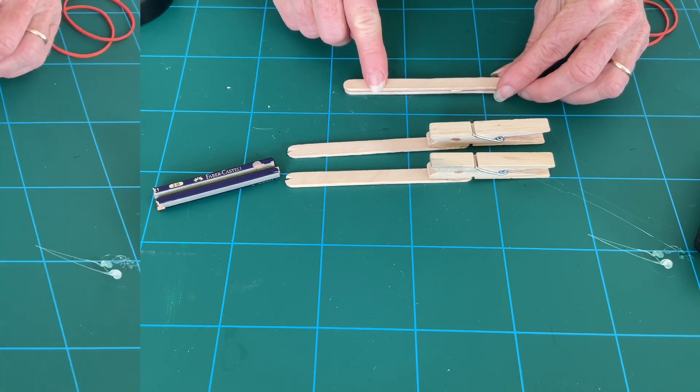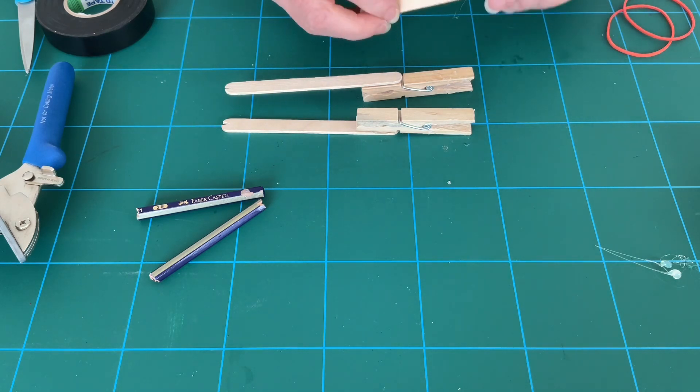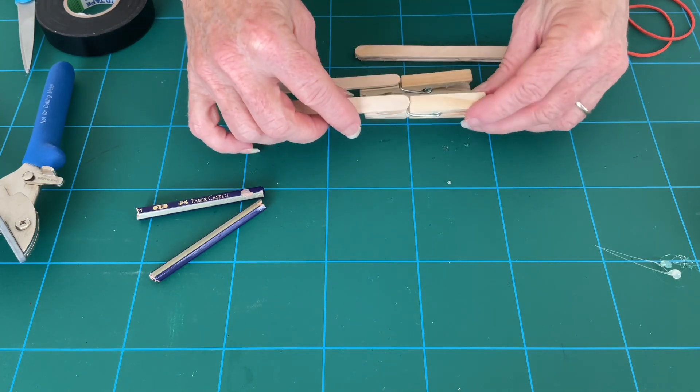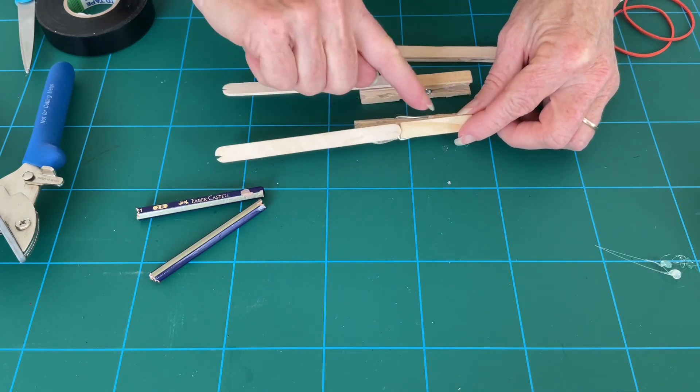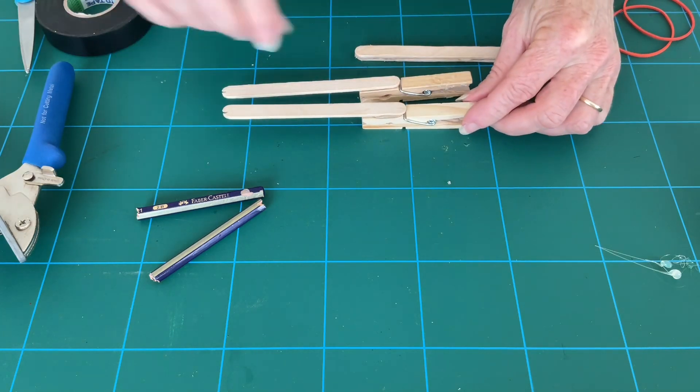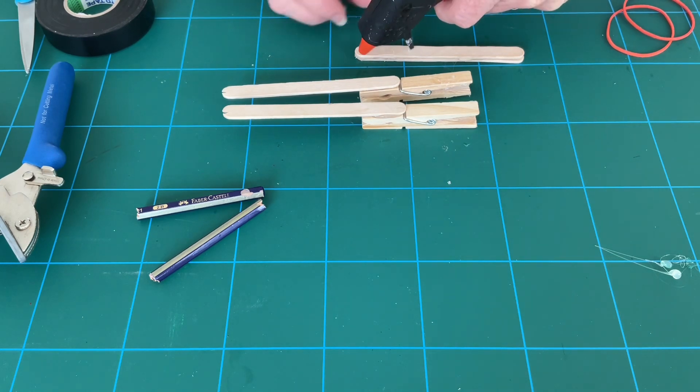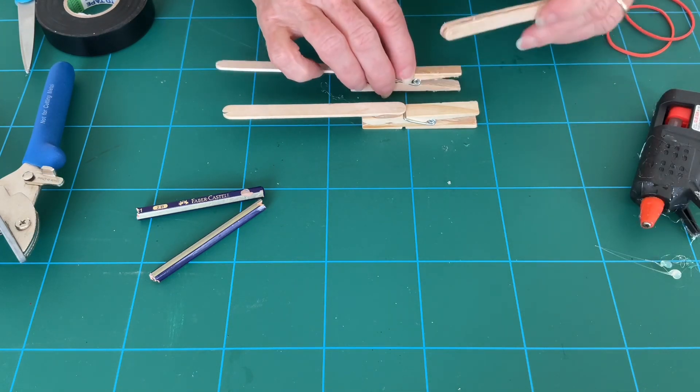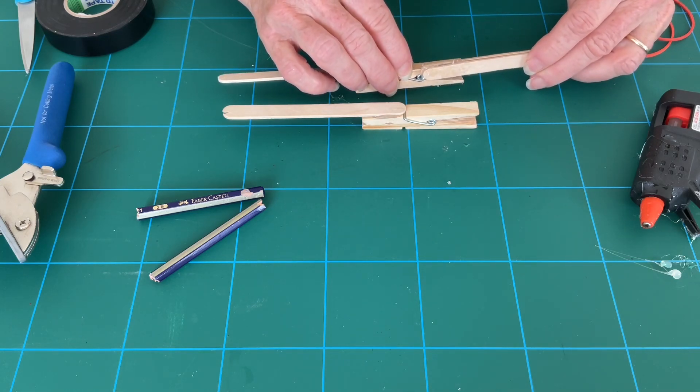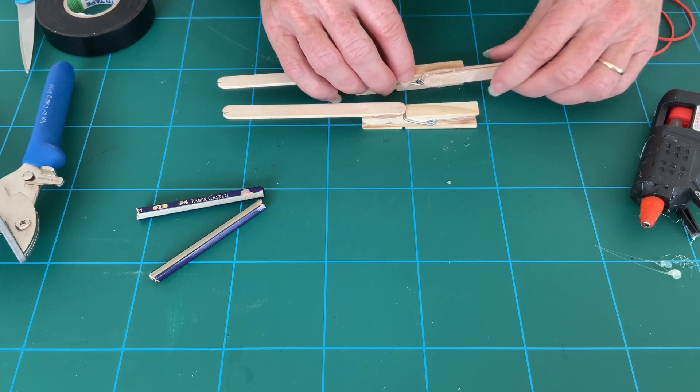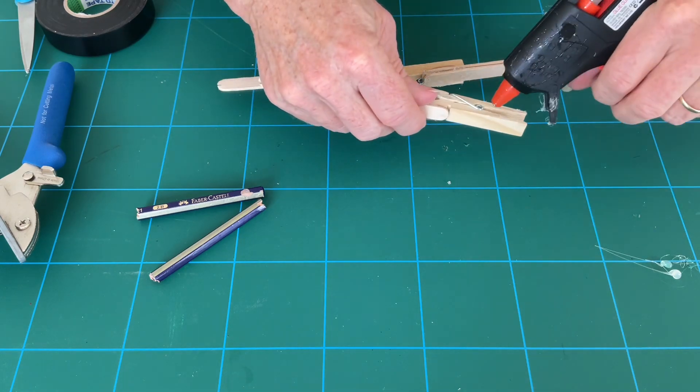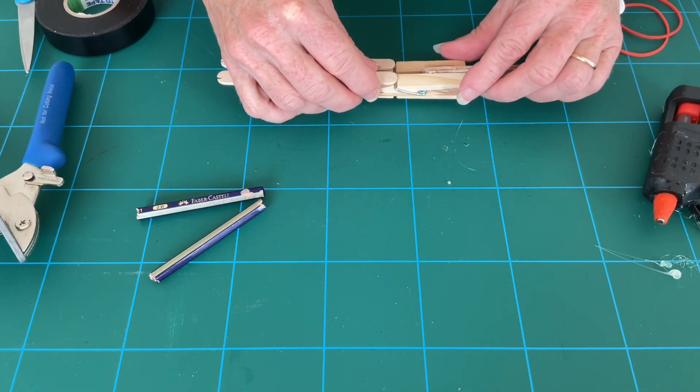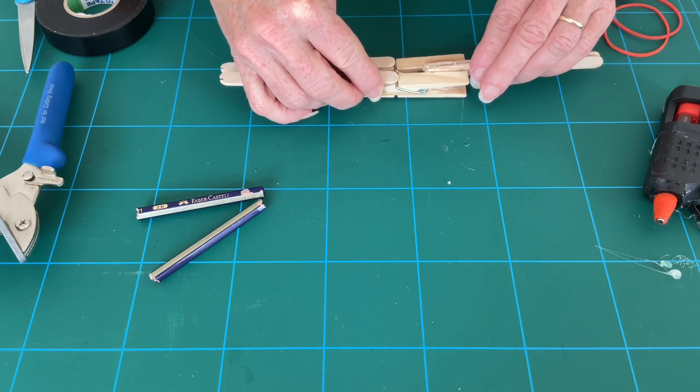Now glue the two sandwich pieces of lolly stick to the lower arm of each peg. I've turned these over so we'll be gluing them to the top of these two, just up until the spring. We'll be doing the same to the other side, so just below the spring to the end. Again, just wait for that to dry.